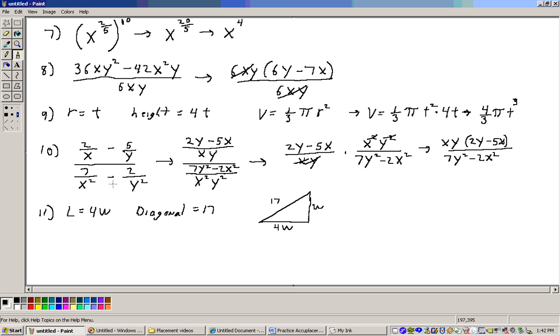On problem 11, it says that the length of a rectangle is 4 times its width. So the length equals 4w. And it says if the diagonal of a rectangle is 17, so here's my rectangle right here being drawn. And this diagonal right here is 17. It says what is the width of the rectangle? So I'm calling this the width, and this length here, it's not drawn to scale, but it's supposed to be 4 times as big as this, so that's why the length is 4w.